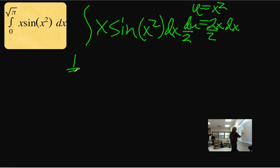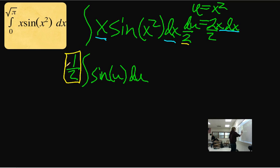And therefore, I'm left with one half sine of u du. If you're wondering where all that came from, well, here's the x dx, which was found right here.